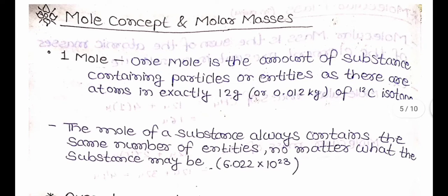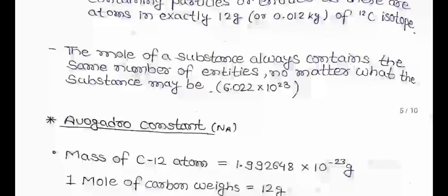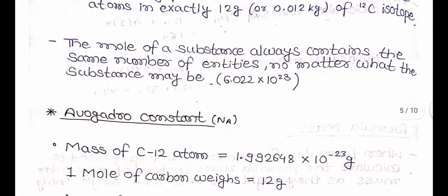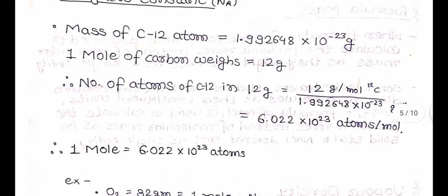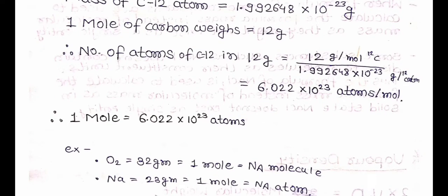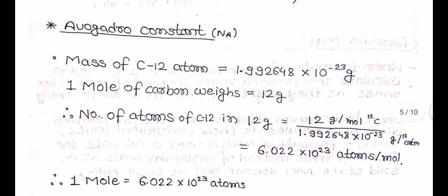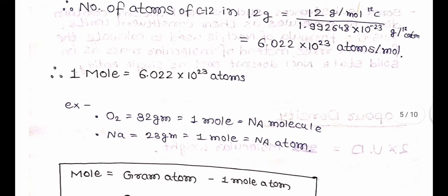Now the next topic is Mole Concept and Molar Masses. Definition of 1 mole: 1 mole is the amount of substance containing particles or entities as there are atoms in exactly 12g of carbon-12 isotope. The mole of a substance always contains the same number of entities no matter what the substance may be. Avogadro Constant is represented by Nₐ. Mass of C-12 atom = 1.992648 × 10⁻²³ g and 1 mole of carbon atom weighs 12g. Therefore, number of atoms of C-12 in 12g = 12g/mol ÷ 1.992648 × 10⁻²³ g/atom = 6.022 × 10²³ atoms per mole — this is the Avogadro number.